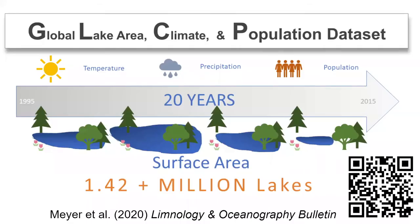To make these data accessible to researchers and managers with a range of data wrangling skill sets, we created the Unified Global Lake Area Climate and Population Dataset, or GLCP. By bringing together remote sensing and climate reanalysis products, the GLCP consists of annual lake area, basin air temperature, precipitation, and human population for over 1.42 million lakes globally from 1995 through 2015.